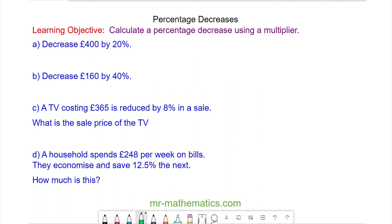Hello and welcome to our lesson on calculating a percentage decrease using a multiplier. We're going to begin by decreasing 400 pounds by 20 percent.